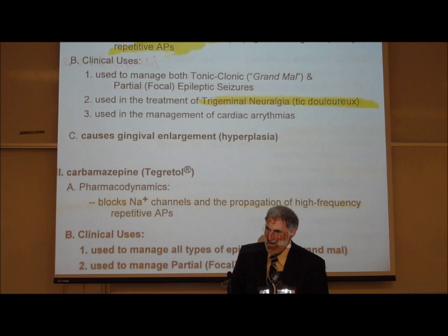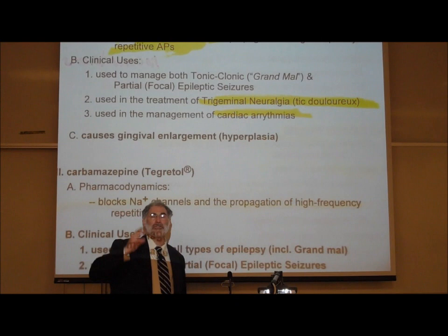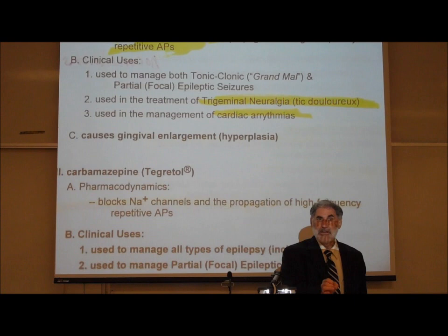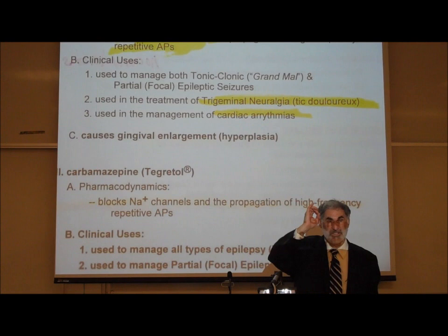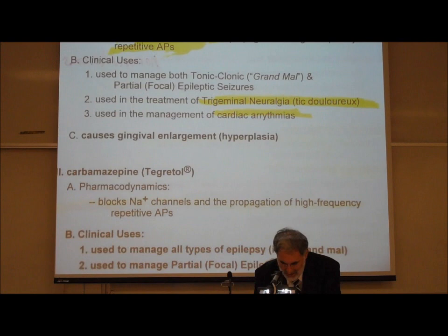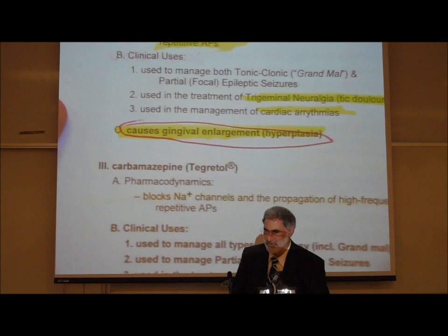Dilantin is also used for cardiac arrhythmias. Any drug that slows down electrical activity in the brain would also slow it down in the heart, and vice versa. We mentioned lidocaine: to dentists it's a local anesthetic, but to most physicians and nurses it's a cardiac antiarrhythmic — it slows down electrical activity by blocking sodium ion channels. Both lidocaine and Dilantin are used for these purposes. And Dilantin is notoriously famous for causing gingival hyperplasia.